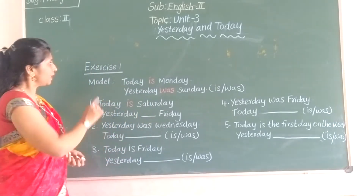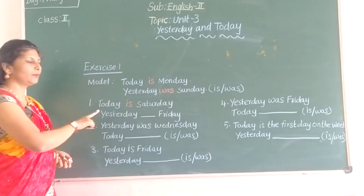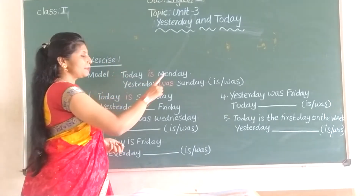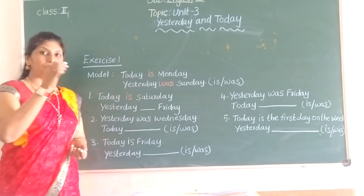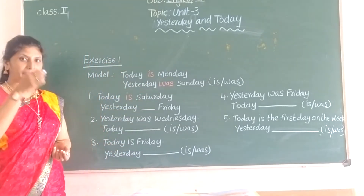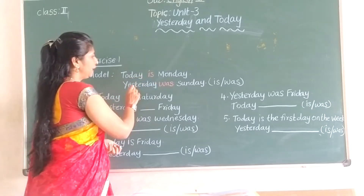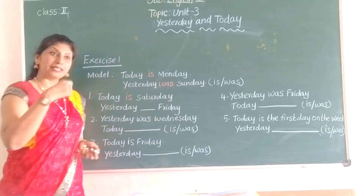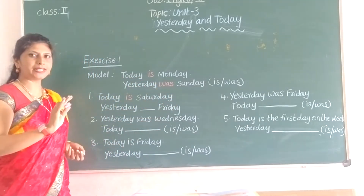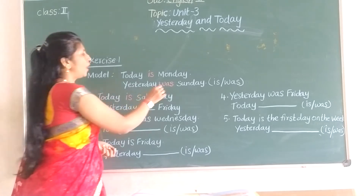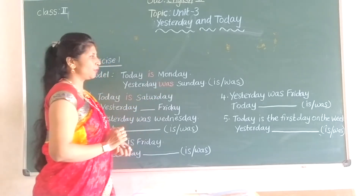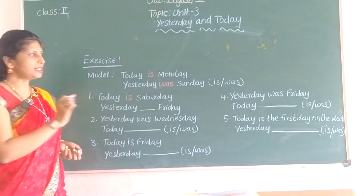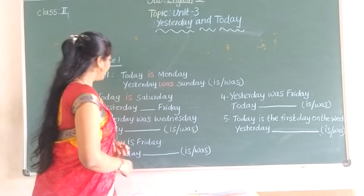Okay, first exercise number 1, model. Today is Monday — today is present, so use 'is'. Yesterday was Sunday — yesterday means past tense, so use 'was'. Today is Monday, yesterday was Saturday.